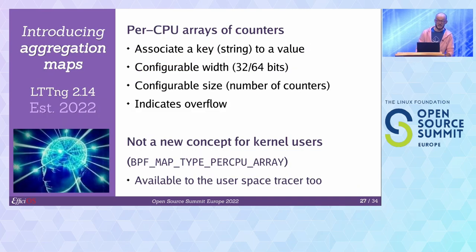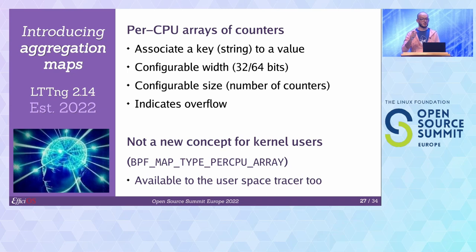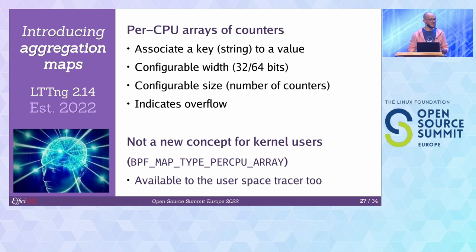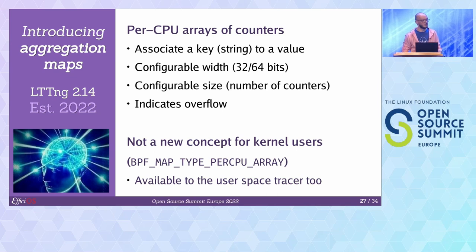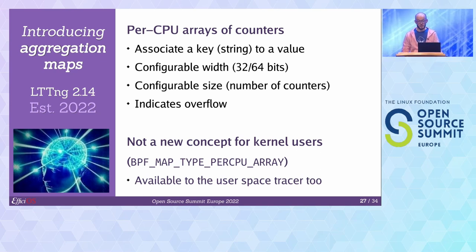We have aggregation maps, which are basically per-CPU arrays of counters. They allow you to use named keys to address the various slots in the array. They have configurable width — 32 or 64 bits — and a configurable size to bound the map. You can track overflows. This is not a new concept — it existed in the kernel as the BPF map type per-CPU array. But we wanted to make it available to user space applications and keep it cheap.